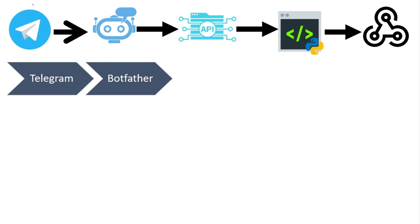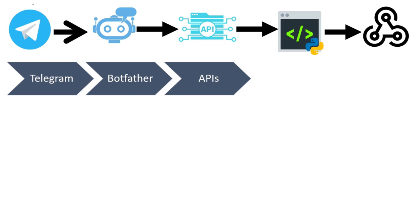Then we are going to make use of Telegram APIs. All these APIs are prepared for different purposes. For example, there is a separate API we are going to use when we want to send a message, and a separate API when we want to send photos or videos. All these interactions with APIs we are going to do using a program.